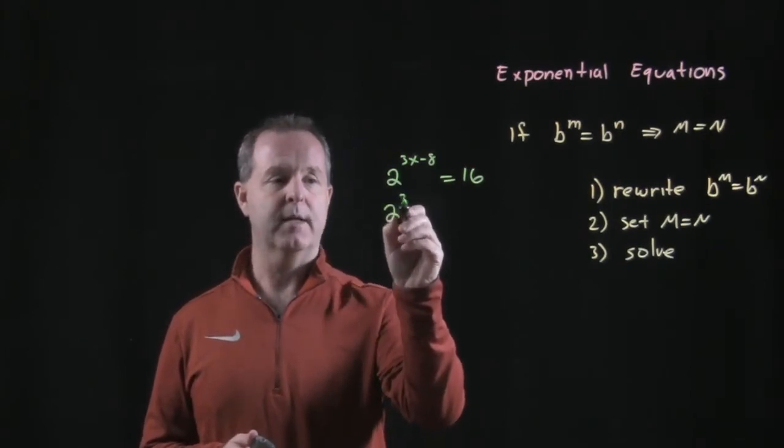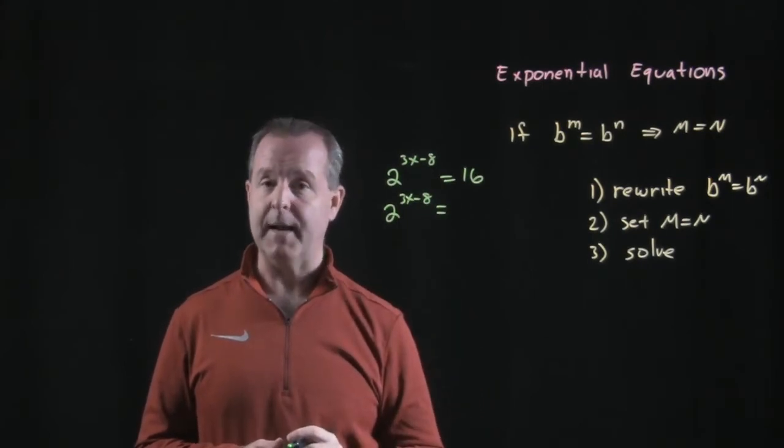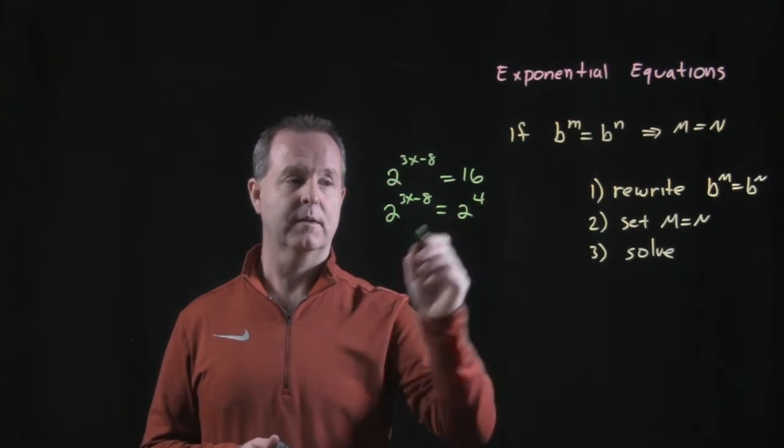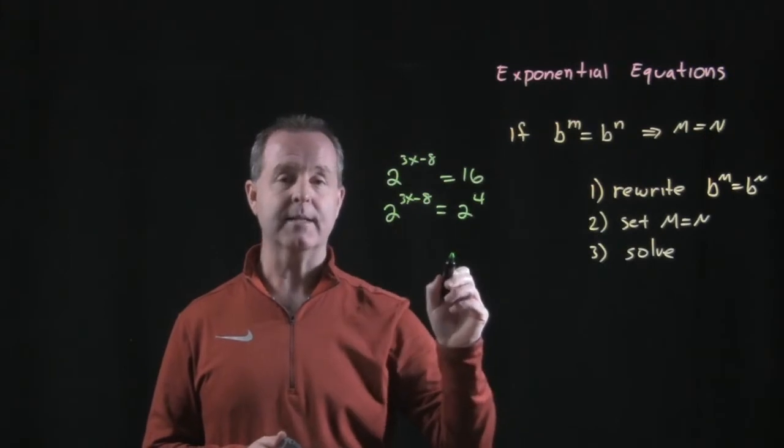This one's already done for us. How do we write 16 as base 2? That's 2 to the 4th. 2 times 2 times 2 times 2 is 16. Now I have common bases.